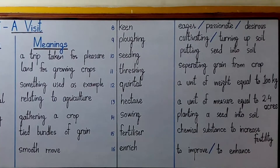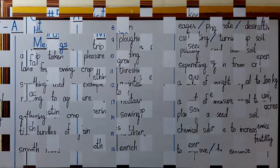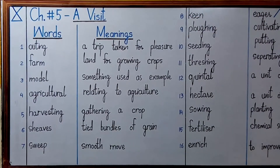But before that we will go through these key words with their meanings so that when you are going through the explanation or reading the chapter on your own, you should have no problem in understanding new or unfamiliar words. Let's start with word number one. The first word is 'outing' which means a trip taken for pleasure.